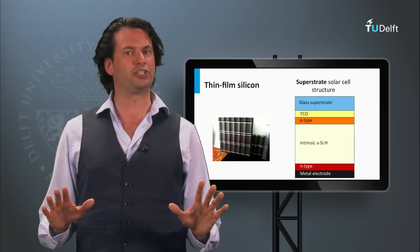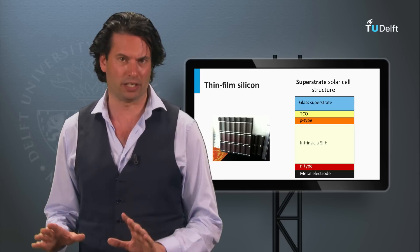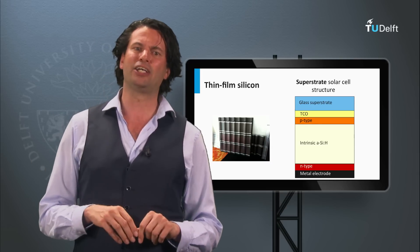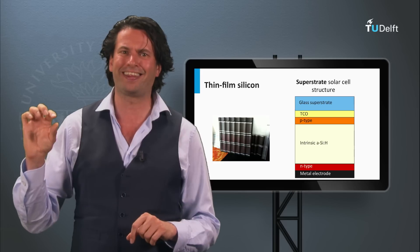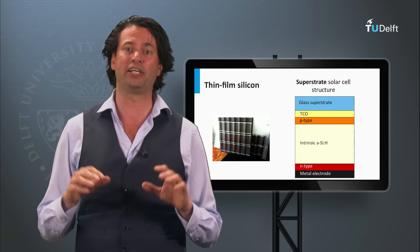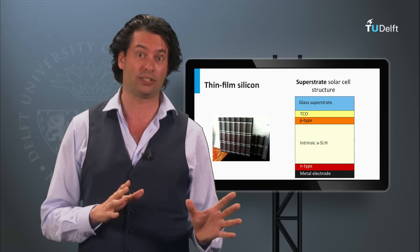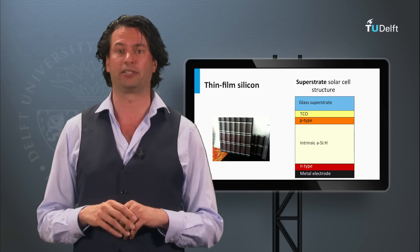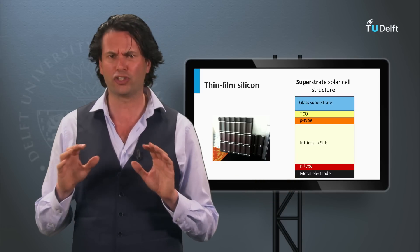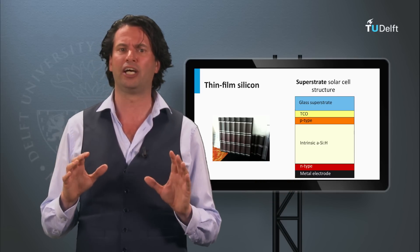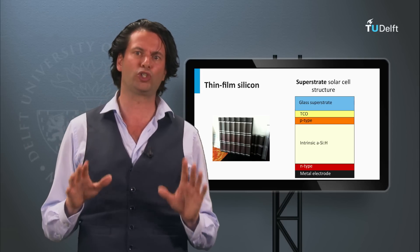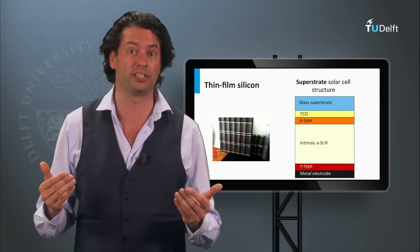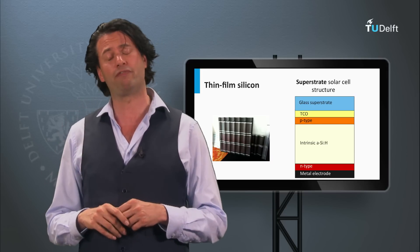Another PV technology based on silicon is thin film silicon. In this case, no crystalline silicon wafers are used, but very thin layers of silicon, which are deposited on glass or a flexible substrate. The silicon does not have the same lattice structure and can be amorphous or nano-crystalline. This technique belongs to the second generation PV technology and will be discussed in week 5.